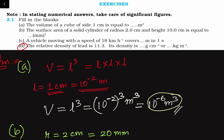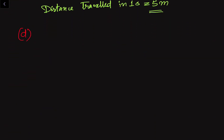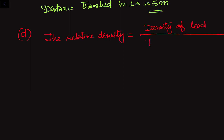In the fourth part, the relative density of lead is 11.3. When relative density is given without specifying in comparison to what, we consider it relative to the density of water. We have to find the density in gram per centimeter cube and kilogram per meter cube. The formula for relative density is: relative density = density of lead divided by density of water.